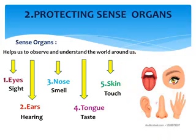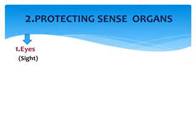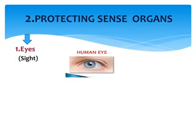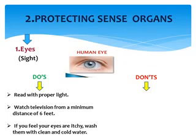So these are the sense organs. First we are going to see about the eyes — they help us to see, to give us sight. So what are the dos? We have to read with proper light, so when you are reading you have to use proper light. Then watch television from a minimum distance of six feet. If you feel your eyes are itchy, wash them with clean and cold water.